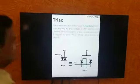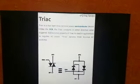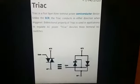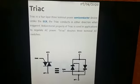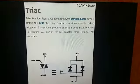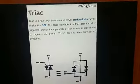TRIAC is a four-layer, three-terminal power semiconductor device. Unlike the SCR, the TRIAC conducts in either direction when triggered. The bidirectional property of TRIAC is used in applications to regulate AC power.